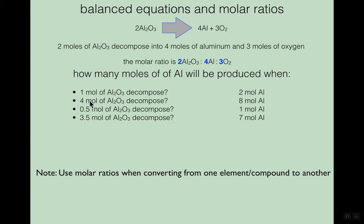If you wanted to double the recipe, putting in four moles of aluminum oxide means all other numbers double: you get eight moles of aluminum and six moles of oxygen. If you cut down to a quarter, four drops to one. And for a number like 3.5 moles of aluminum oxide, there's a mathematical method — you'd get seven moles of aluminum.